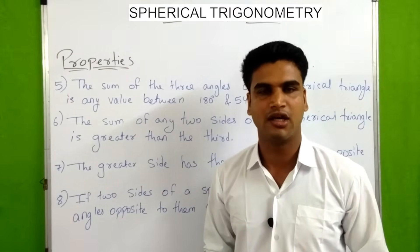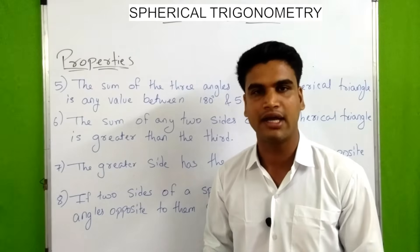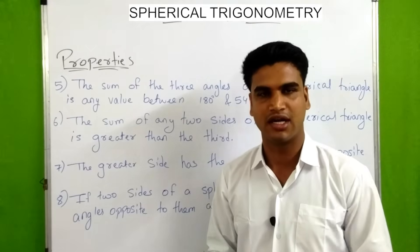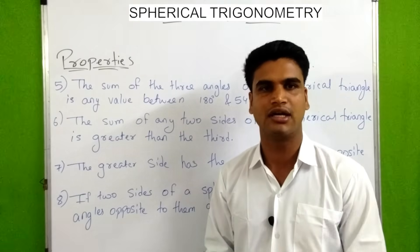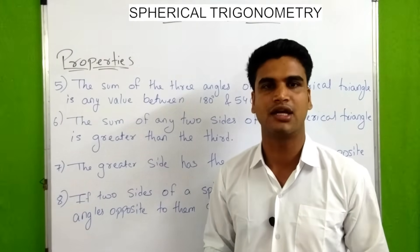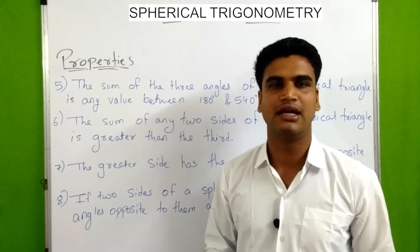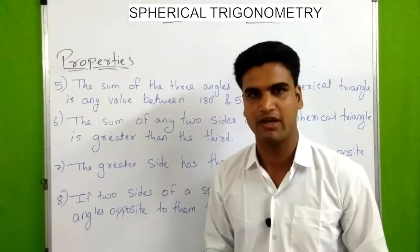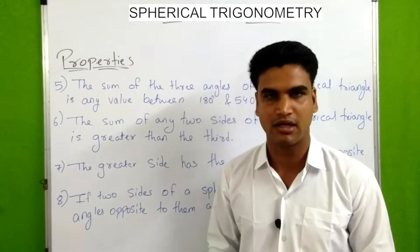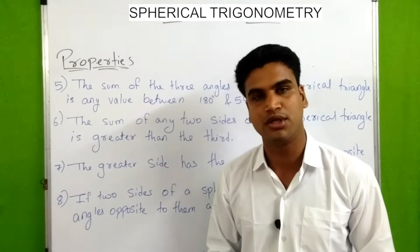Additional classifications: if one angle of a spherical triangle is 90 degrees, it is known as a right angle spherical triangle. If a side is 90 degrees, it is known as a quadrantal spherical triangle. If a spherical triangle is neither a right angle spherical triangle nor a quadrantal triangle, then it is known as an oblique spherical triangle.